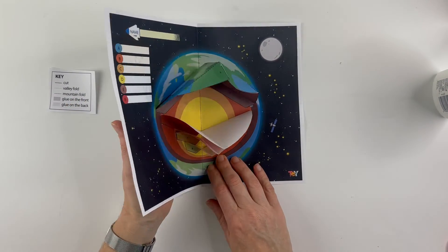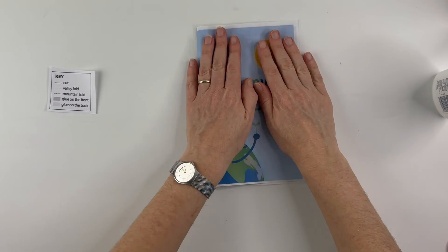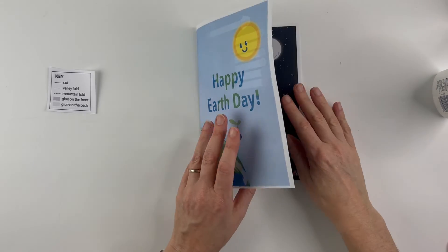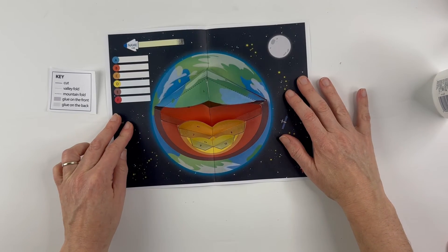So that's it. And once it's dried, you should be able to fold this and then reopen and the layers of the earth pop up like so.